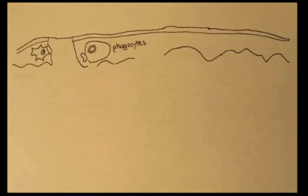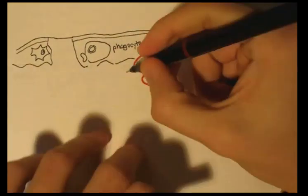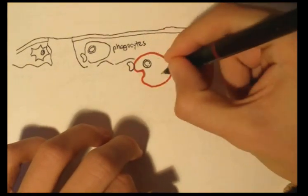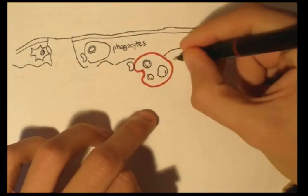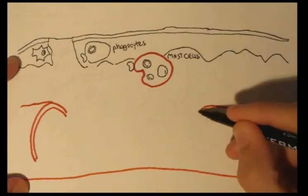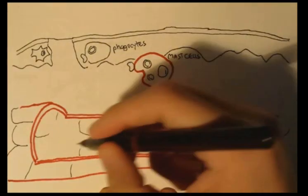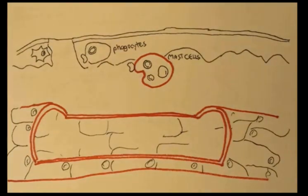Also under the skin are special granulocytes called mast cells, which contain histamine granules within the cell. There are also blood vessels all around the skin.